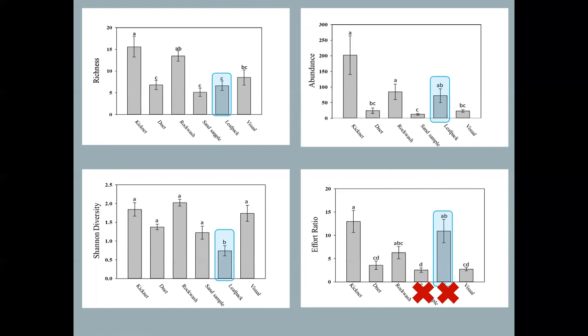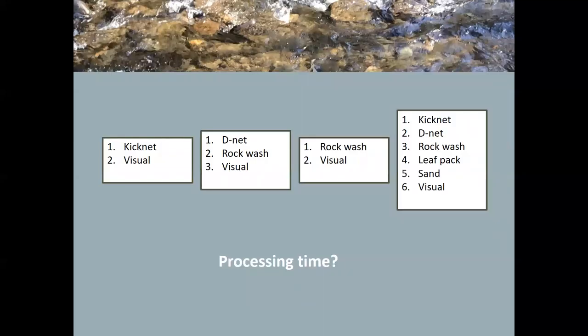So three different sampling combinations. Kicknet and visual. So we'll have a little more processing time with Kicknet. Visual, a little processing time. D-Net, Rockwash, and visual. So again, a little more processing time, but that's not specifically being addressed, but something to keep in mind. And then Rockwash and visual.